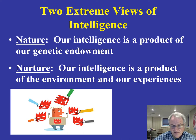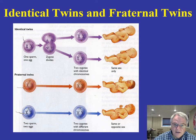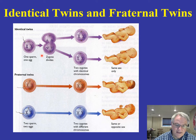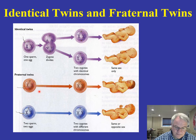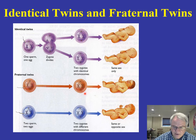Let's refresh our memory about identical twins and fraternal twins. Identical twins come from one sperm and one egg — the zygote divides, giving two zygotes with identical chromosomes. They're same sex and share 100% of their genes. In fraternal twins, there are two sperm and two eggs fertilized at the same time, sharing about 50% of chromosomes. The offspring can be both male, both female, or one of each.